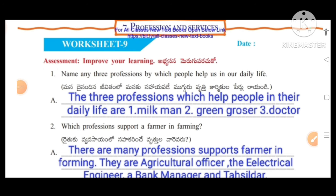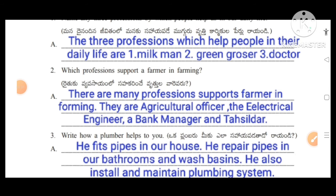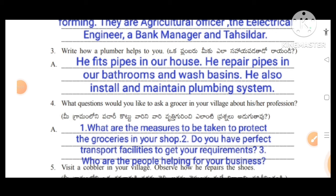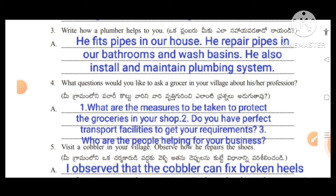Worksheet number nine — Assessment: Improve our learning. Name any three professions by which people help us in our daily life. The three professions are: milkman, green grocer, doctor, vendor, etc. Which professions support a farmer in farming? They are: agricultural officer, electrical engineer, bank manager, and tasildar. Write how a plumber helps you: he fixes pipes in our house, repairs pipes in bathrooms and wash basins, and also installs and maintains the plumbing system.